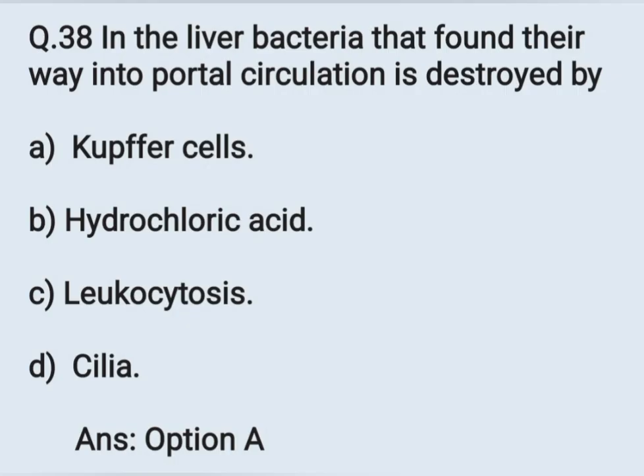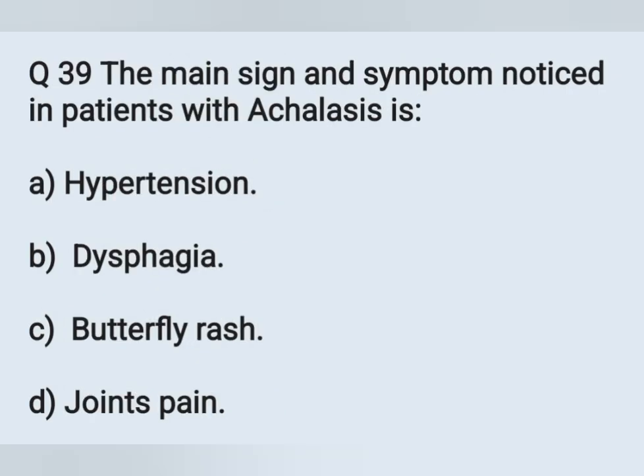Question number 39. The main signs and symptoms noticed in a patient with achalasia — Option A: Hypertension. Option B: Dysphagia. Option C: Butterfly rash. Option D: Joint pain. Achalasia is an esophageal motility disorder. The main sign and symptom is dysphagia — Option B is the correct answer.